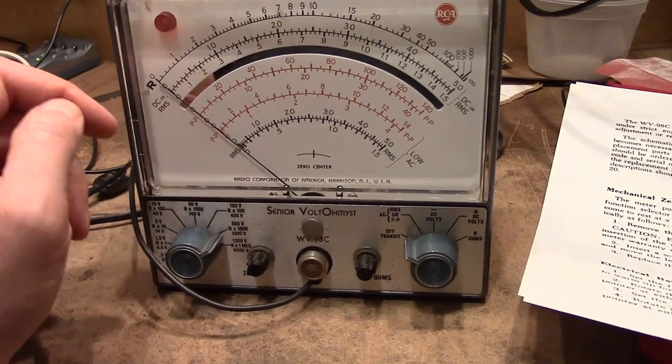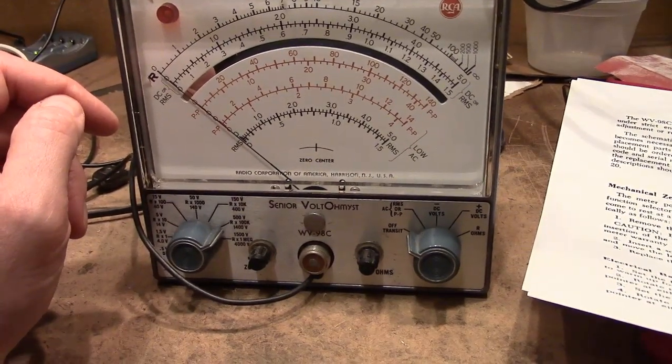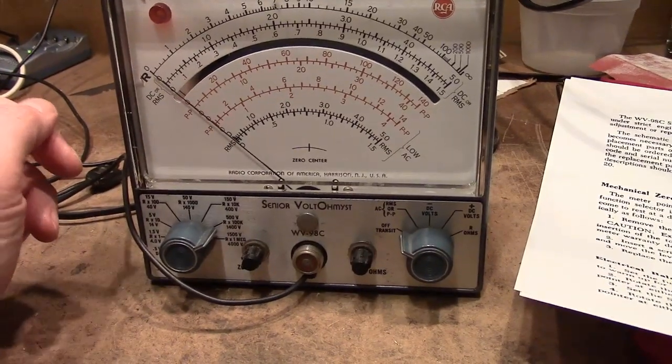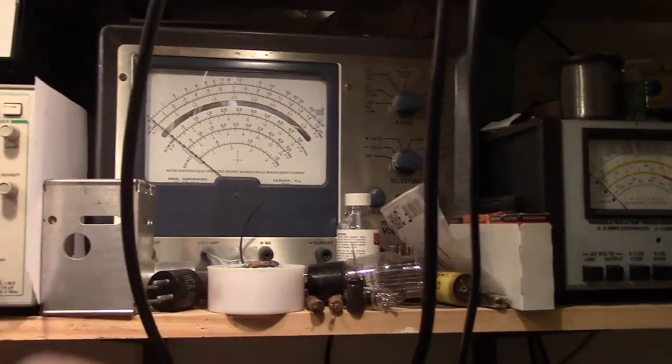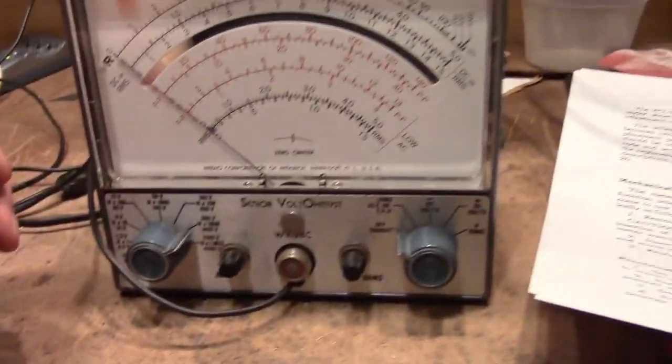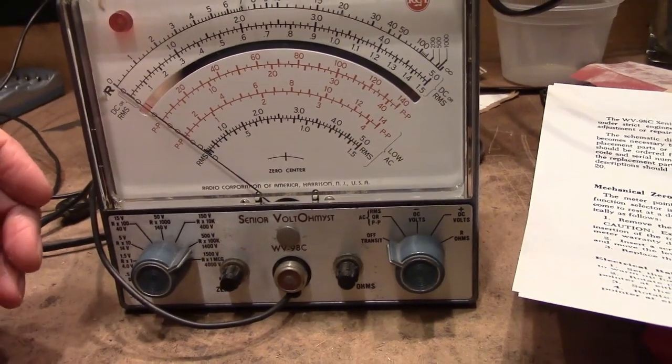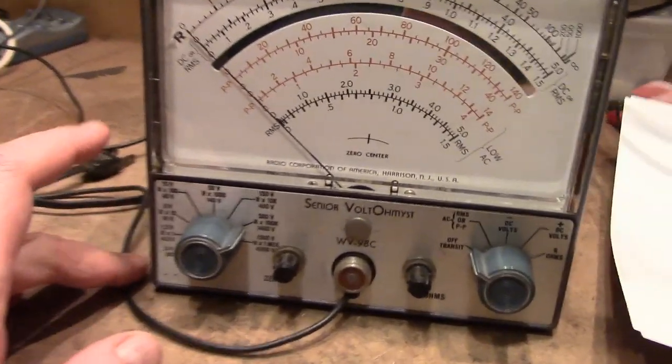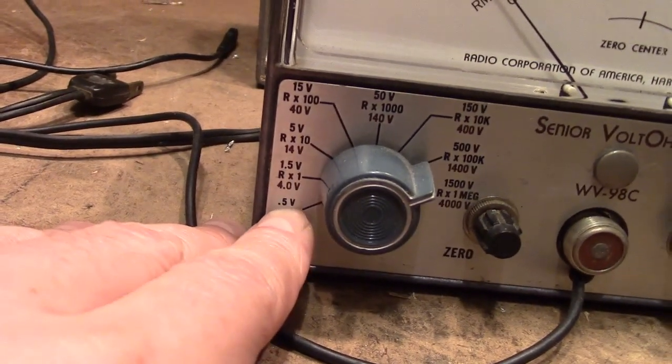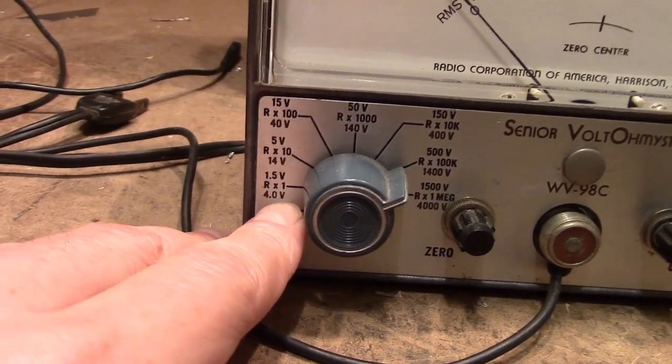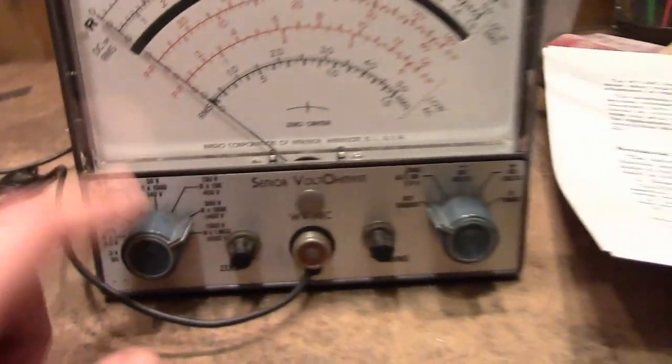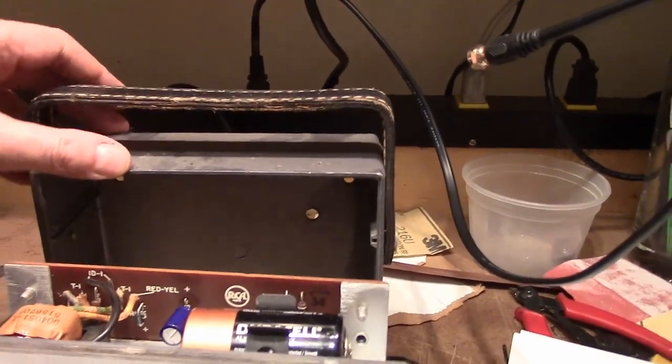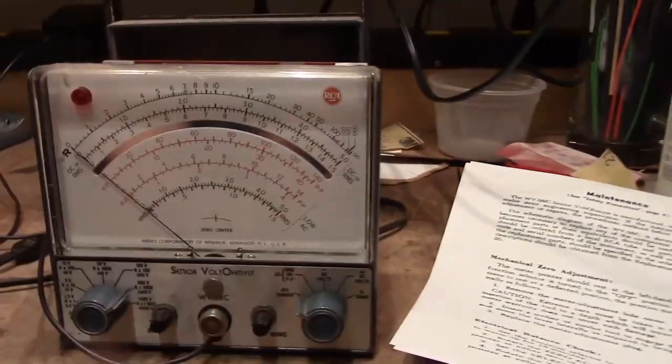Now, RCA made several Volt Ohmist models. There was, I believe, a Junior, a Standard, a Senior, and back there a big one that's a Master. All have somewhat different features. The Senior is one of the better ones because it has a very sensitive range. It goes down to 0.5 on the DC and 1.5 on the AC. Those other models don't go that low. It's also a well-made, nice die-cast aluminum cabinet that it comes in and a nice big meter.